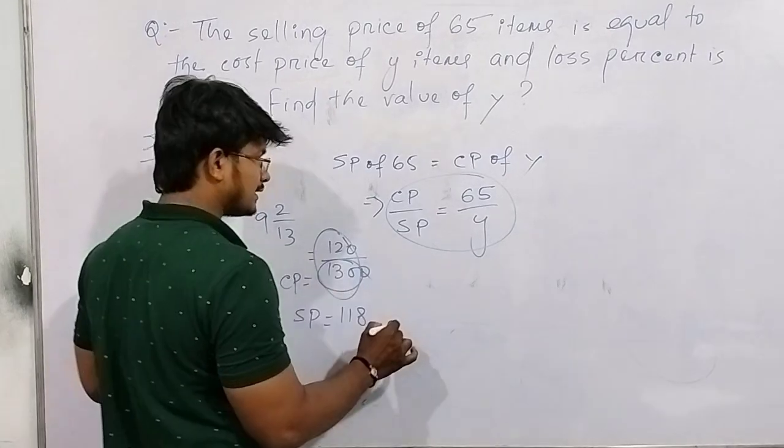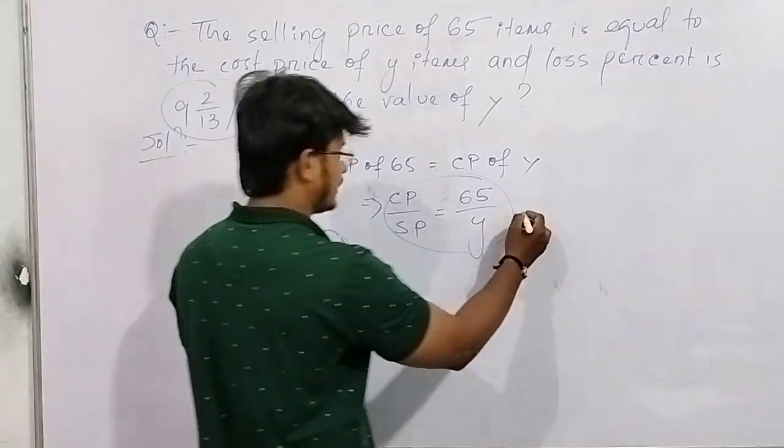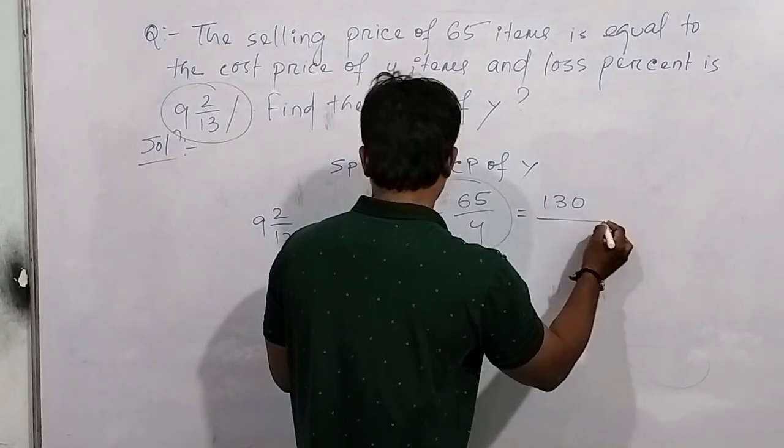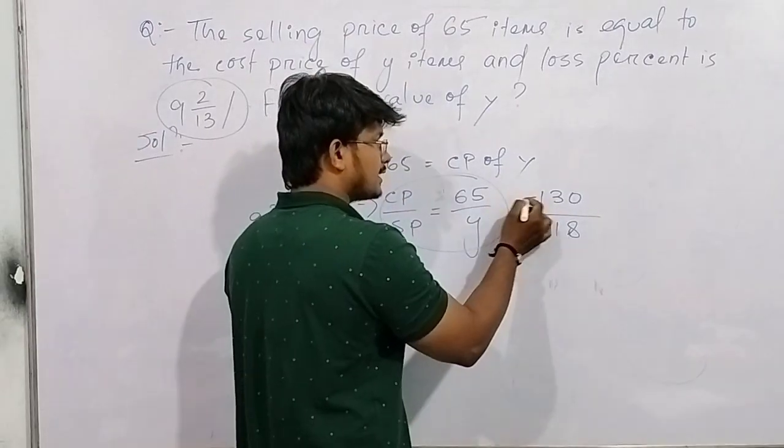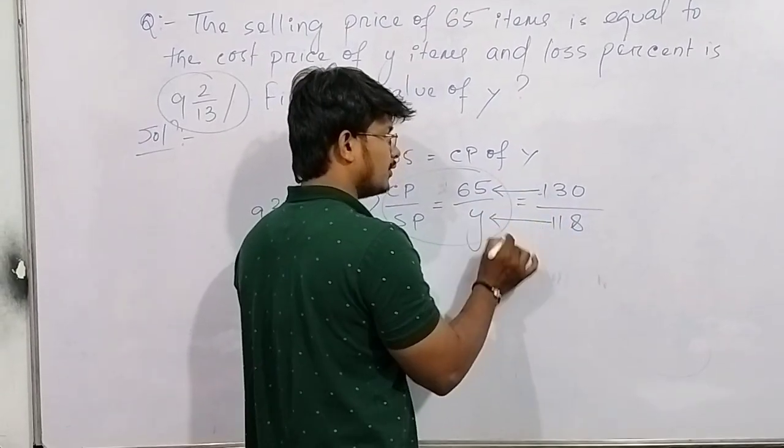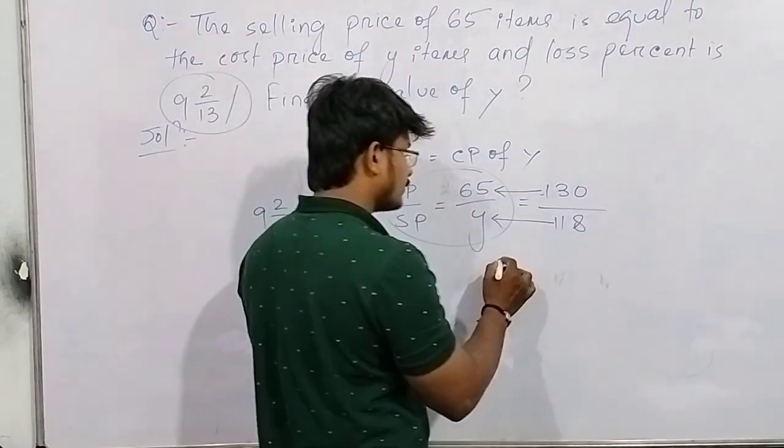So we get CP to SP ratio as 130 by 118. So 130 is 65, then 118 will be how much? Question done. So answer for this question is 59.